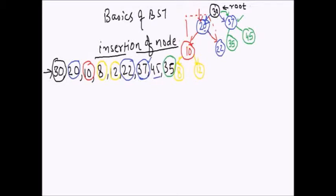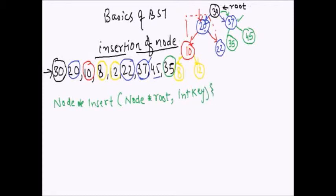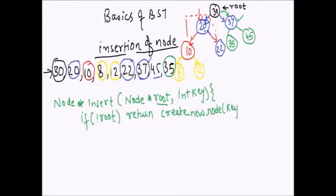Now how can we code it? The code is very simple — it is a recursive code, because every time whatever we are doing at the root, we are doing it for the subtrees also. The only thing we have to decide is whether the node has to be attached to the left hand side or the right hand side. So we will create a function called node* insert and pass root as the parameter, and the key of the new node to be inserted.